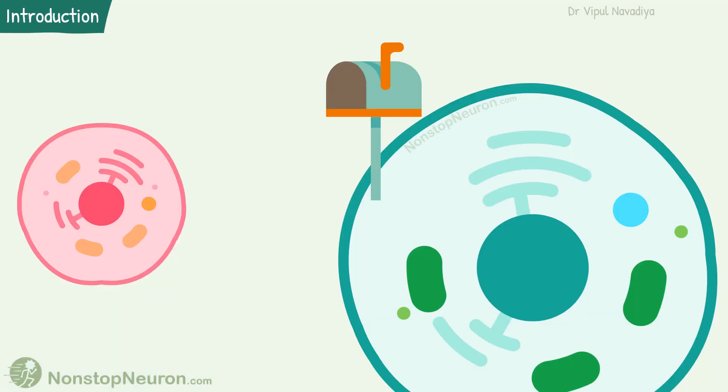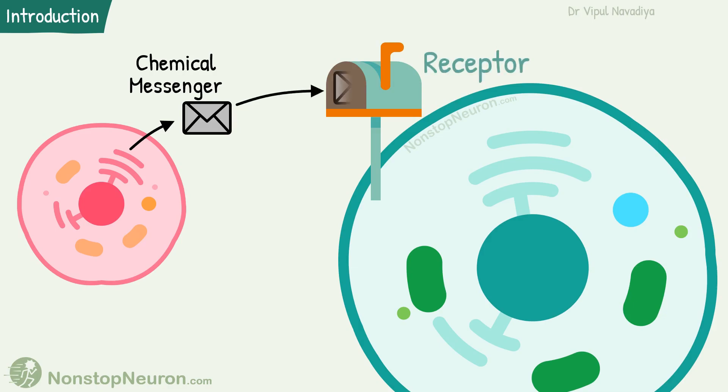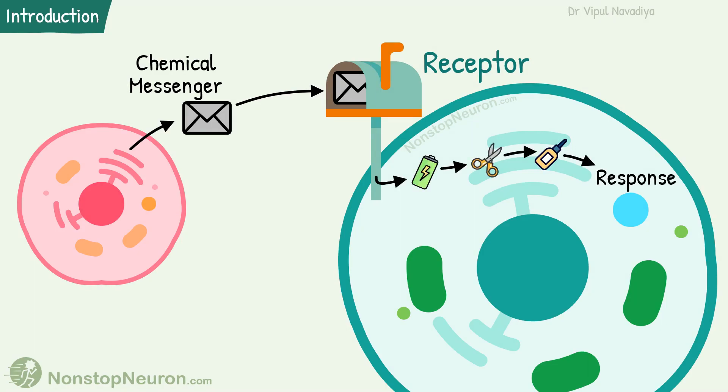As we have seen in the video of cell to cell communication, a cell speaks by releasing chemical messengers and another cell listens with receptors. The binding of the messenger with receptor triggers the downstream events that ultimately leads to the response by the cell. This is the overall position of a receptor in cell to cell communication. They are the first to contact external messengers — they receive a signal and transduce it into a response.